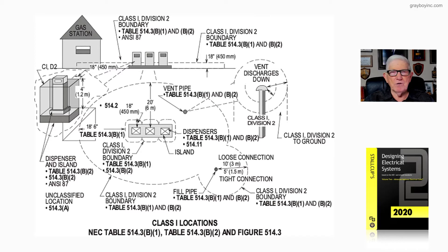But basically this just shows in the horizontal direction, 20 feet out, is a Class 1 Division 2 location up to 18 inches as you see there. Again, in our Table 514.3B1 and B2.